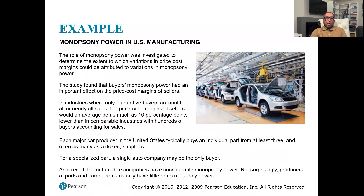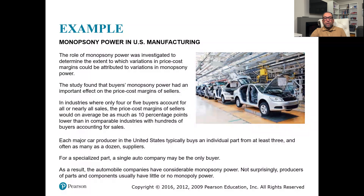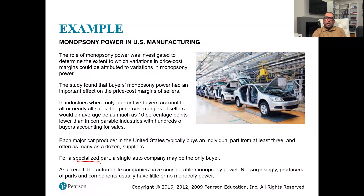Each major car producer in the United States typically buys individual parts from at least three and often up to a dozen suppliers. For a specialized part, a single auto company may be the only buyer — for example, a component produced exclusively for Honda or Toyota. As a result, automobile companies have considerable monopsony power, and producers of parts and components often have little or no monopoly power.